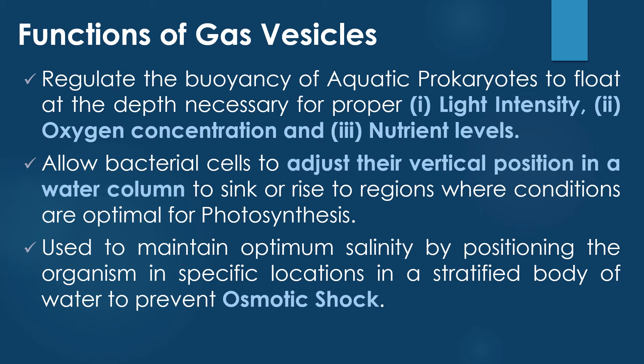The phototrophic aquatic prokaryotes in particular can benefit from their gas vesicles because they allow the cell to adjust its vertical position in a water column — to sink or rise to regions where conditions like light intensity are optimal for the photosynthesis process.